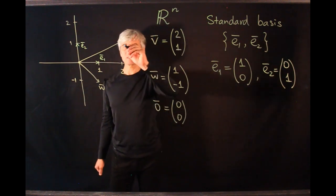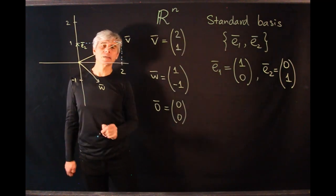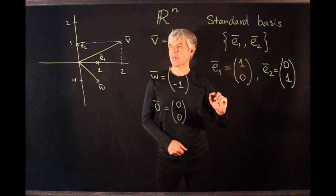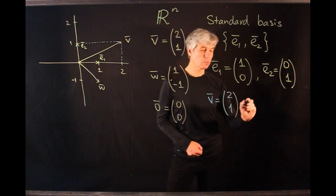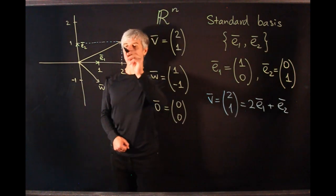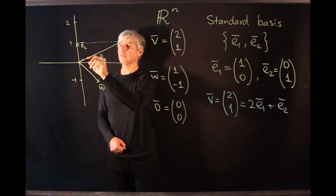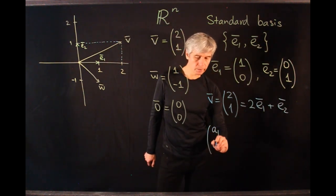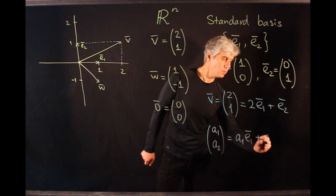We compute coordinates of vectors by constructing a rectangle with sides on the x and y-axis. From the resulting parallelogram rule, we can write that vector v, which is (2, 1), equals 2 times E1 plus E2. The projection to the x-axis is 2 times E1, and the projection to the y-axis is E2. In general, a vector with coordinates A1, A2 can be written as A1 times E1 plus A2 times E2.